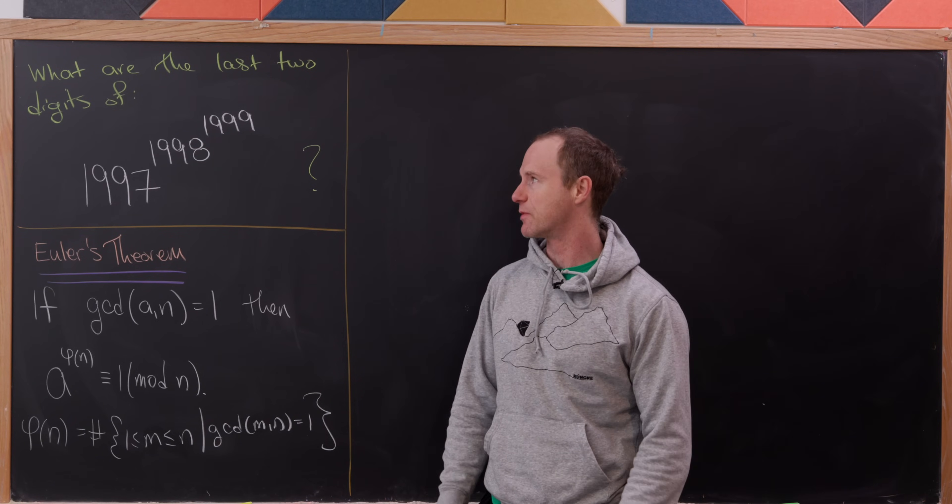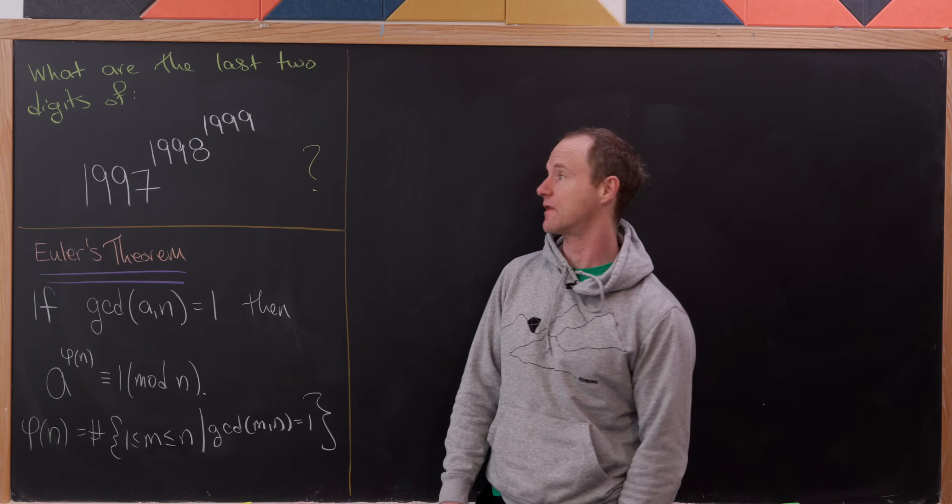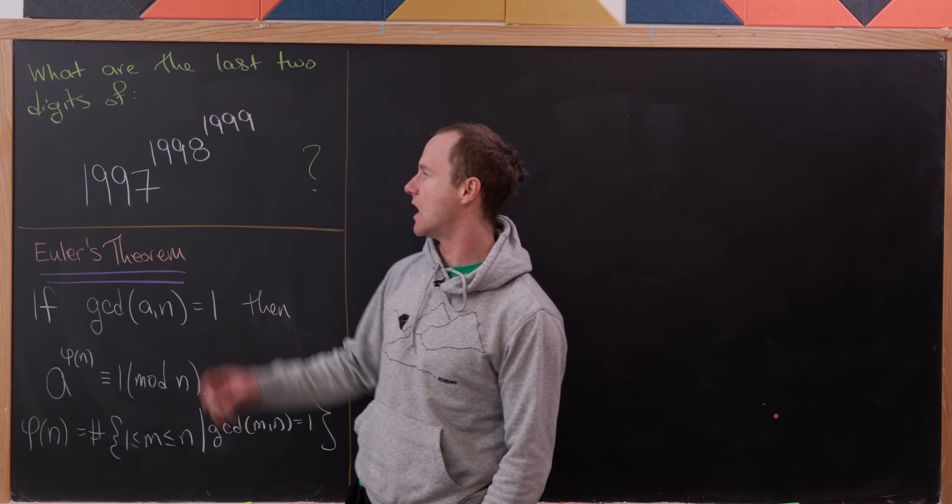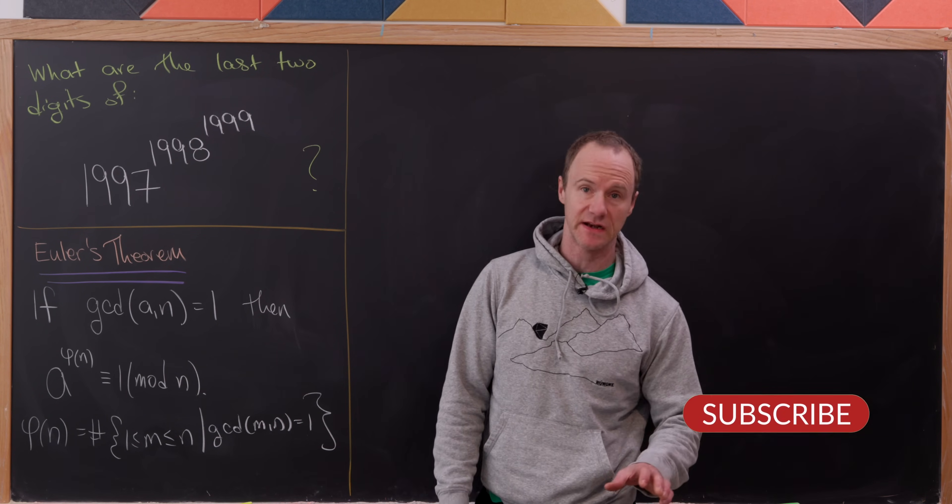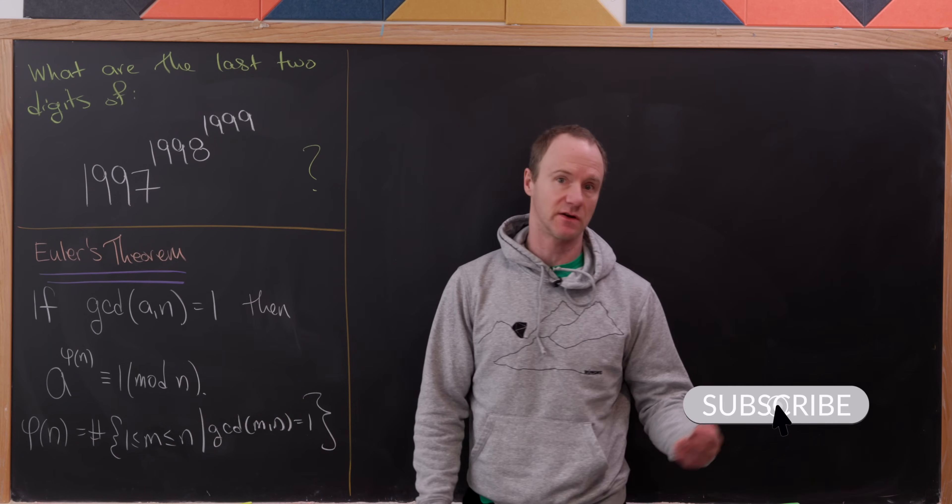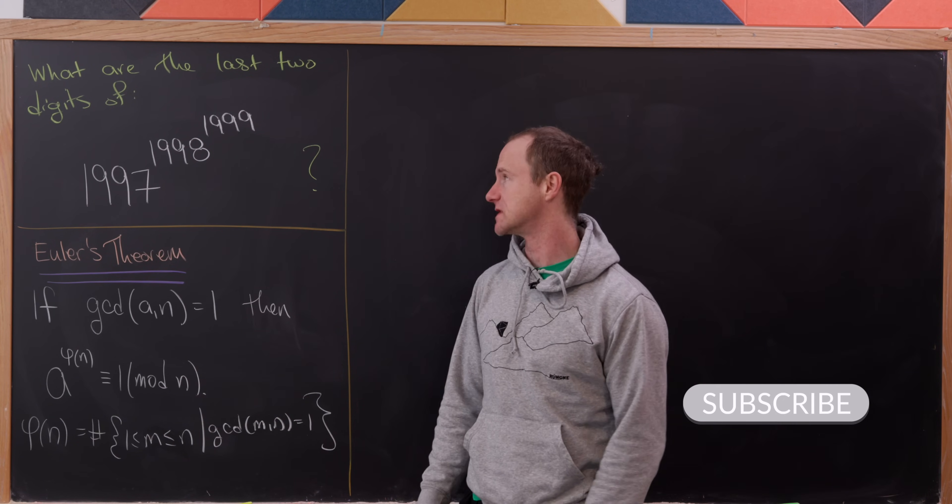Today we're going to look at a nice classic type of problem. We're going to find the last two digits of 1,997 to the power 1,998 to the power 1,999.